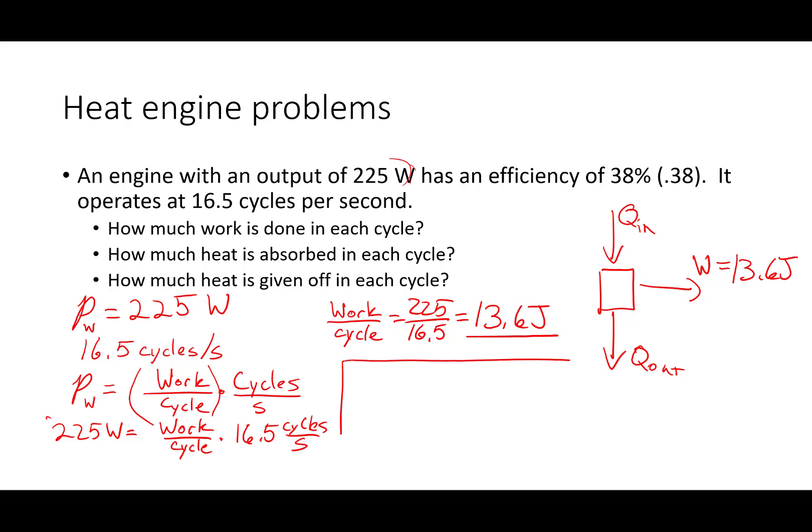Next up we need to find how much heat is absorbed in each cycle, and we're going to use efficiency for that. Eta equals useful output work over total input, so Qin, which implies that, if we solve it, Qin equals work divided by eta. So that's equal to 13.6 over 0.38. 35.8 joules.